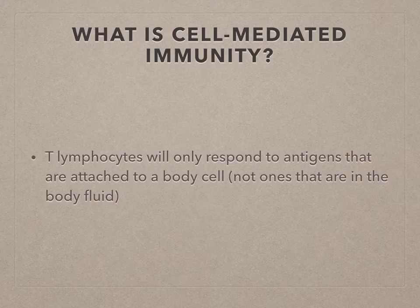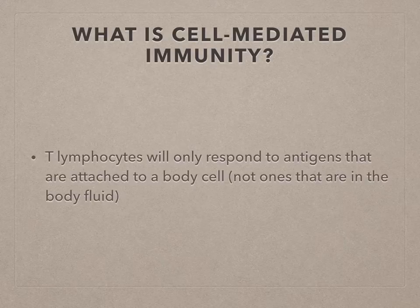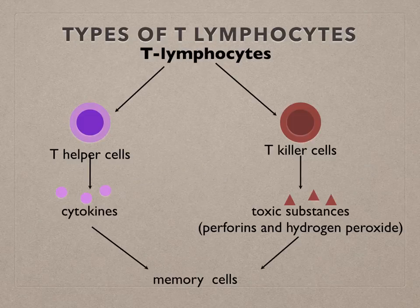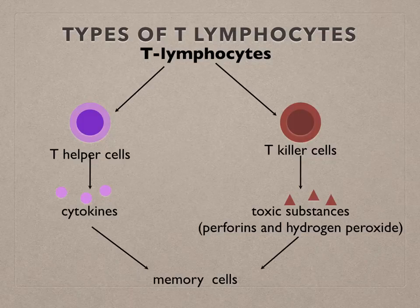Cell-mediated immunity is when T lymphocytes only respond to antigens that are attached to a body cell — they do not respond to antigens in the body fluid. There are two main classes of T lymphocytes: T helper cells and T killer cells, and both of these can produce their own types of memory cells.